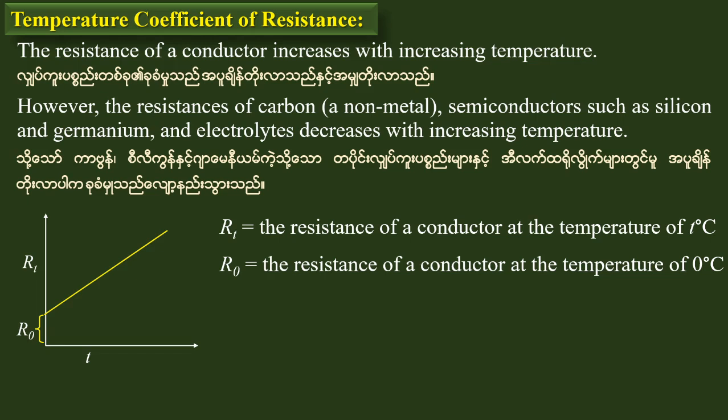This is the straight line equation. Rt is equal to R0 plus R0 alpha t. This is R0 alpha — this is the slope of the graph.